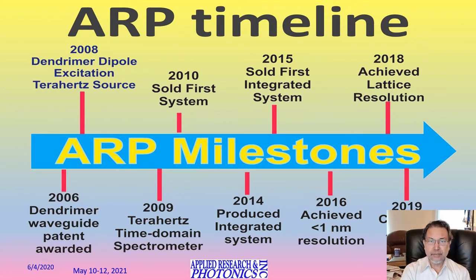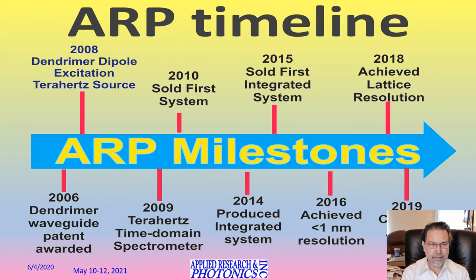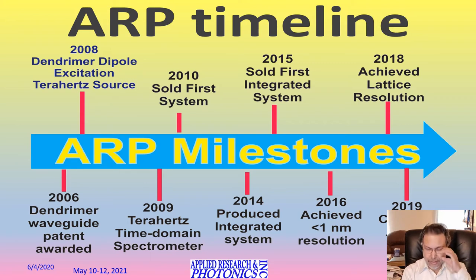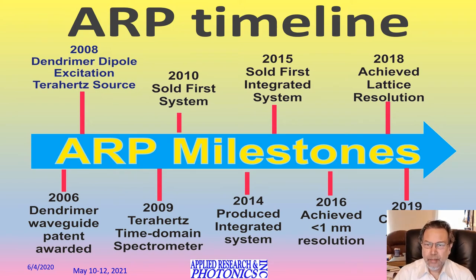Our company, Applied Research and Photonics, or ARP, was started many years ago and slowly came forward. We were able to demonstrate less than one nanometer resolution with a bigger wavelength — which is T-ray — back in 2016. And then in 2018, we achieved angstrom resolution, or less than one angstrom resolution, to be able to see the atomic lattice with this bigger wavelength of T-ray.